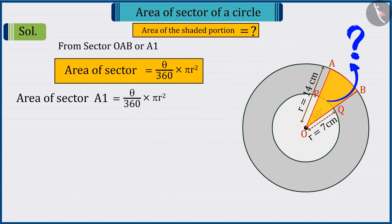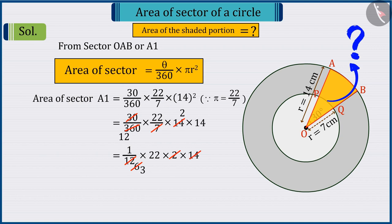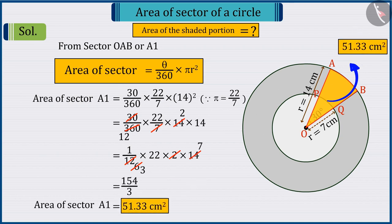Absolutely correct. Put the value of theta and R in the area formula of the sector. On solving, the value of A1 is 51.33 square centimeters.